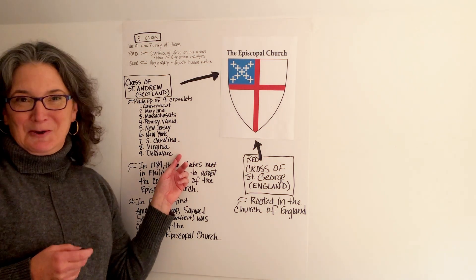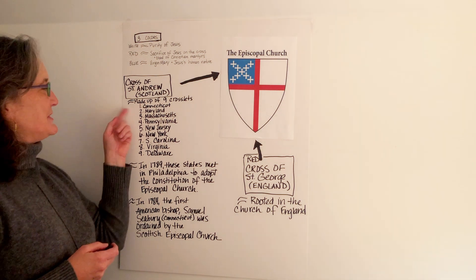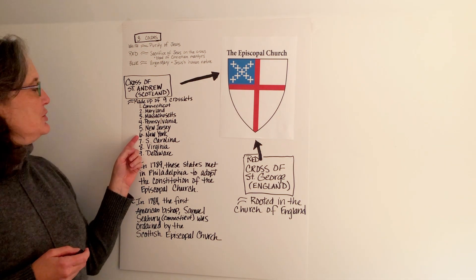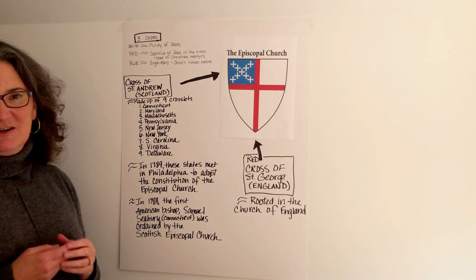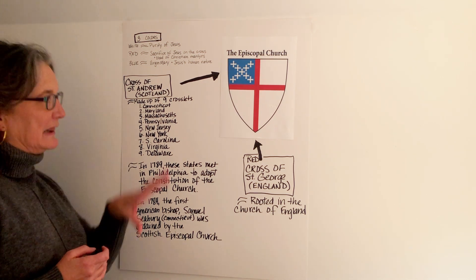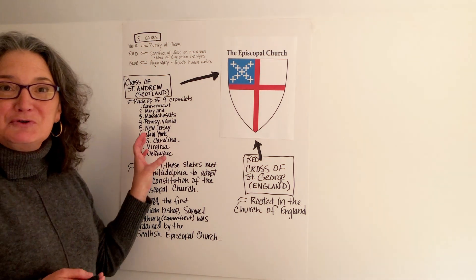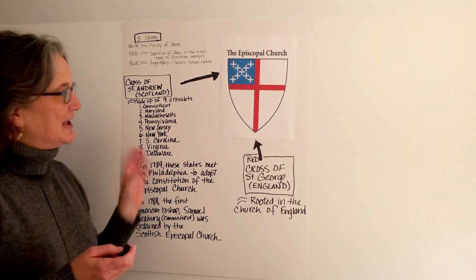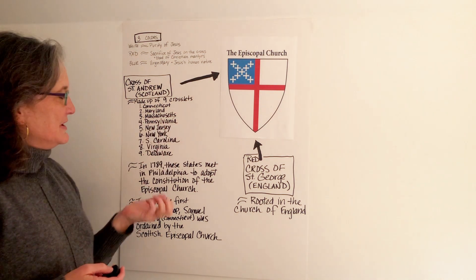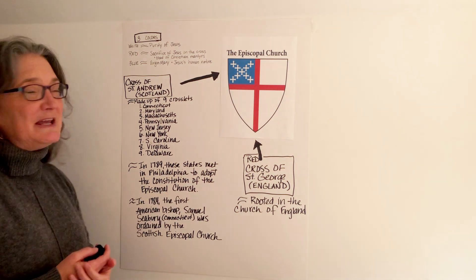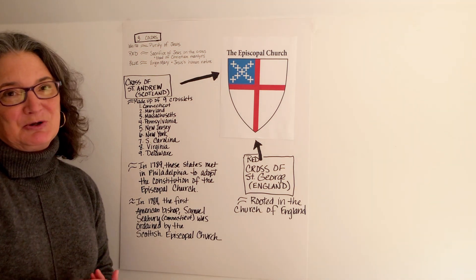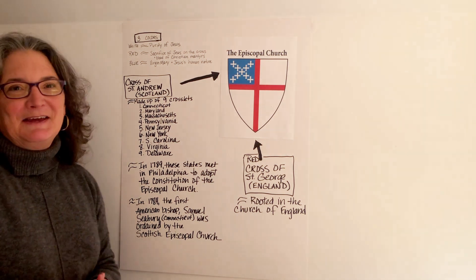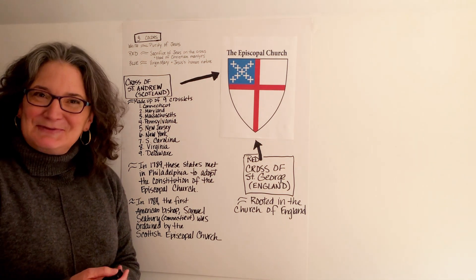As you can see on my low-tech poster board, those states were Connecticut, Maryland, Massachusetts, Pennsylvania, New Jersey, New York, South Carolina, Virginia, and Delaware. A lot of the same folks who signed this Constitution also signed the U.S. Constitution. Many of those gathered in Philadelphia to create the Constitution of the Episcopal Church were part of the other constitutional convention as well. So this concludes our lesson for today.